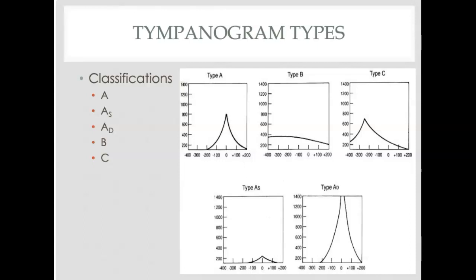If you think back to your undergrad class, we have different classifications. We have a type A tympanogram, type A sub S, type A sub D, type B, and type C, and we're going to go through each one individually.